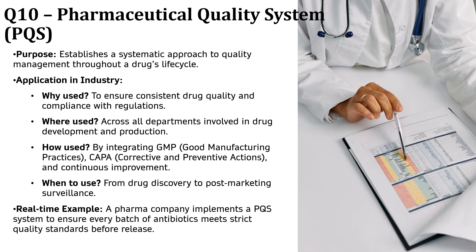Now let's dive into ICH Q10, Pharmaceutical Quality System. This guideline helps companies establish a structured and systematic approach to maintaining consistent drug quality throughout its entire life cycle. A medicine's quality, safety and effectiveness must be consistent from the first batch to the millionth. ICH Q10 ensures companies follow a standardized approach to quality management, preventing errors and ensuring regulatory compliance. For example, a pharmaceutical company producing antibiotics follows a PQS system to ensure every batch meets strict quality standards before being released to the market, preventing defective medicines from reaching patients. Without ICH Q10, companies might struggle with inconsistent quality, failed regulatory inspections and product recalls.